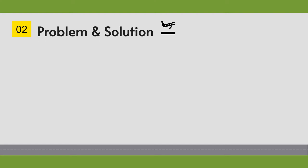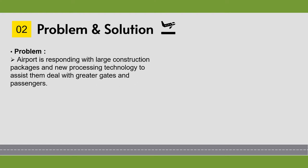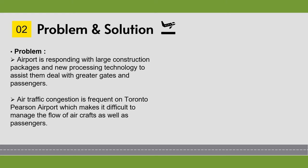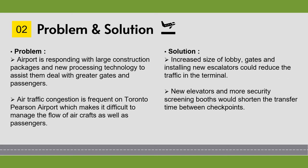Here I am discussing the problems of Pearson Airport along with their solutions. The airport is responding with large construction packages and new processing technology to deal with greater gates and passengers. Air traffic congestion is frequent at Toronto Pearson Airport, making it difficult to manage the flow of aircraft and passengers. Our design would shorten transfer times, maximize staff efficiency, and optimize air processes. Passengers can process through faster with new pre-boarding screening points, and with energy system upgrades, we will reduce overall energy consumption.